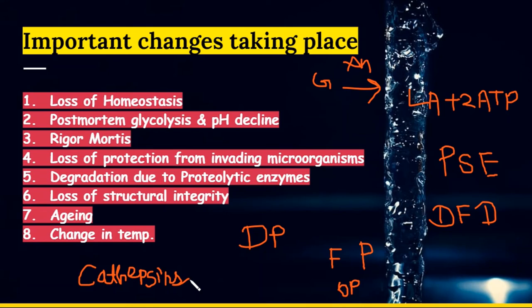Loss of structural integrity involves post-mortem alterations of membrane properties which initiate degradation of muscle proteins. There is a rapid decline in muscle pH which also causes denaturation of connective tissues and proteins. Aging means holding the carcasses just above the freezing point to prevent spoilage, accompanied by an enhancement in meat flavor and texture.